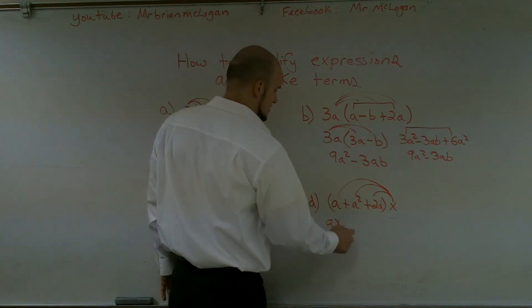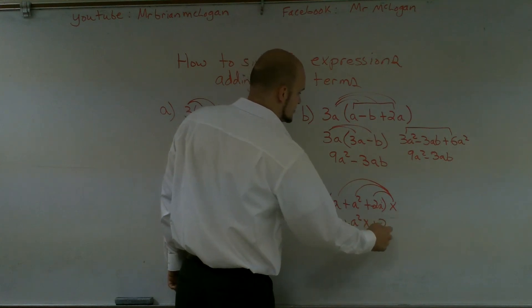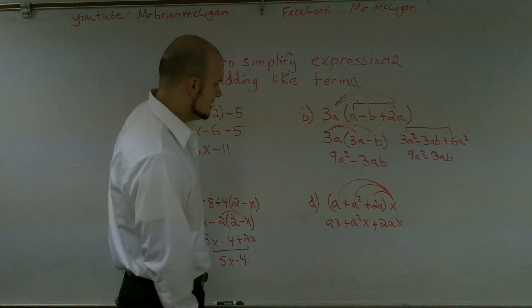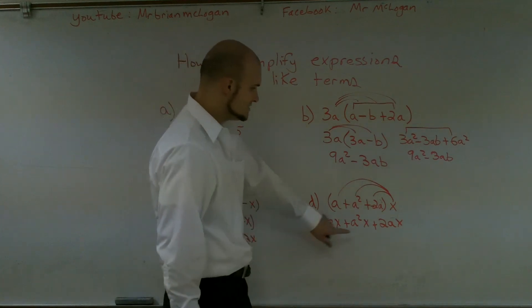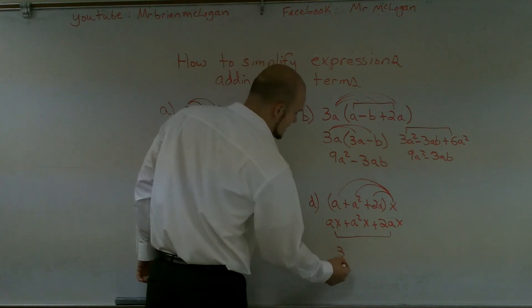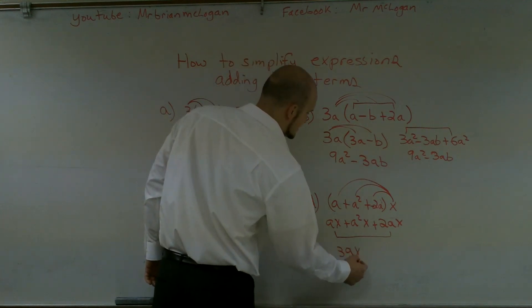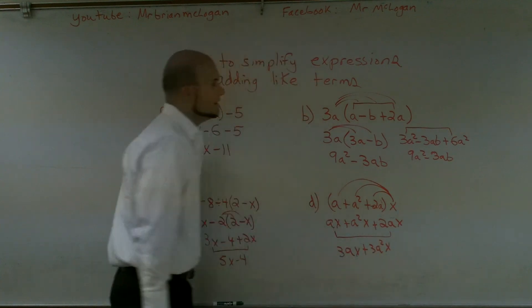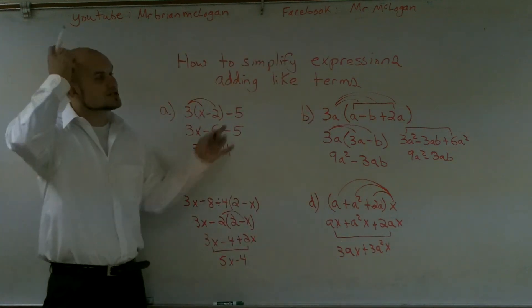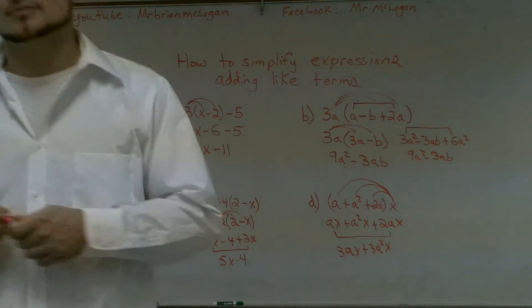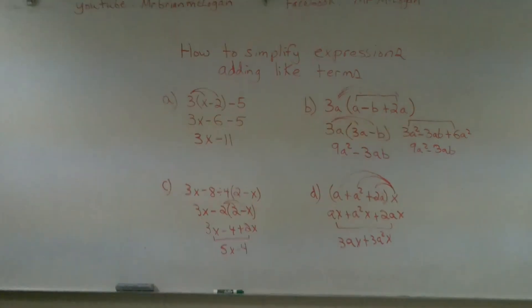So here I get ax plus a squared x plus 2ax. And then I notice that these two are exactly, again, the same terms. So therefore, I get 3ax plus a squared x. Okay? So that's how you simplify expressions by adding like terms and I guess using the distributive property. I get it!